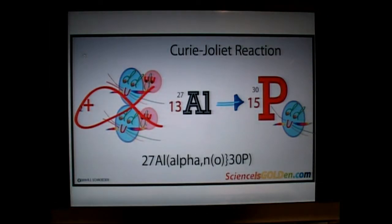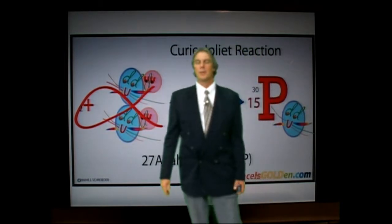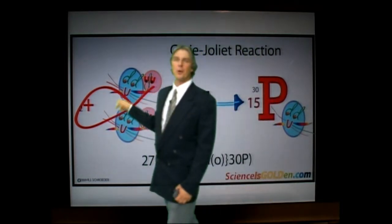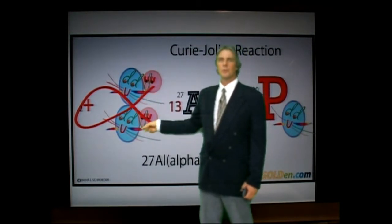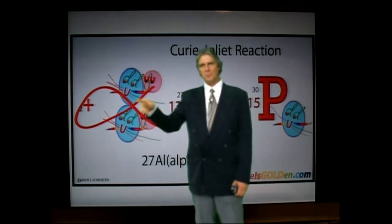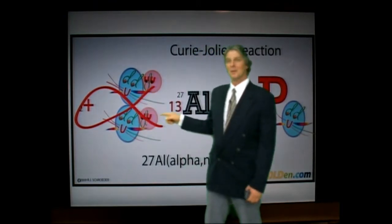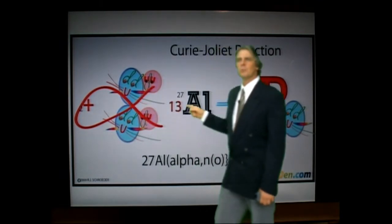Now this is what Madame Curie's daughter and Joliet in France did. This was pretty remarkable. Now they're shooting alpha particles. Two protons, two neutrons, we call these alpha fishies. Alpha particle is the alpha fish, letter alpha. Two protons, two neutrons, you shoot that into an aluminum.